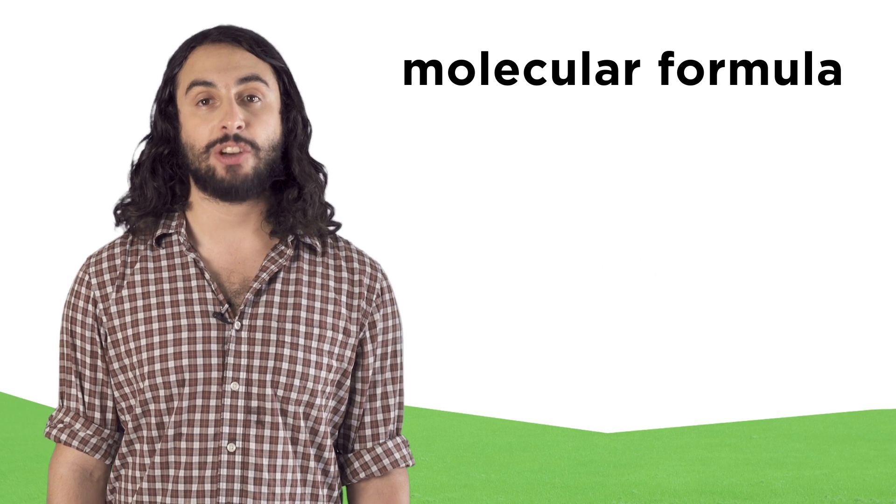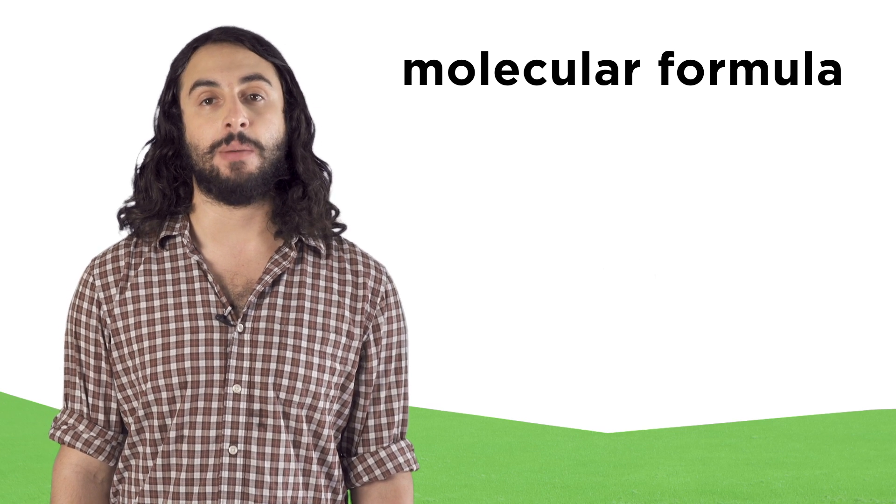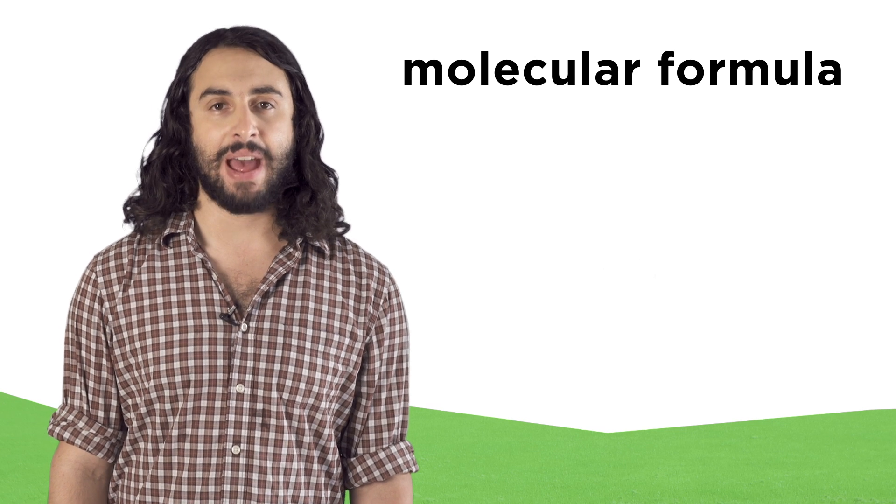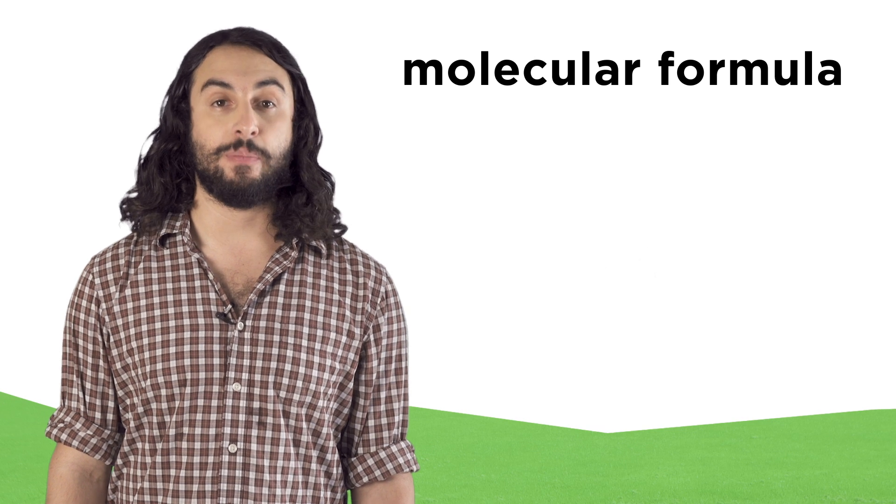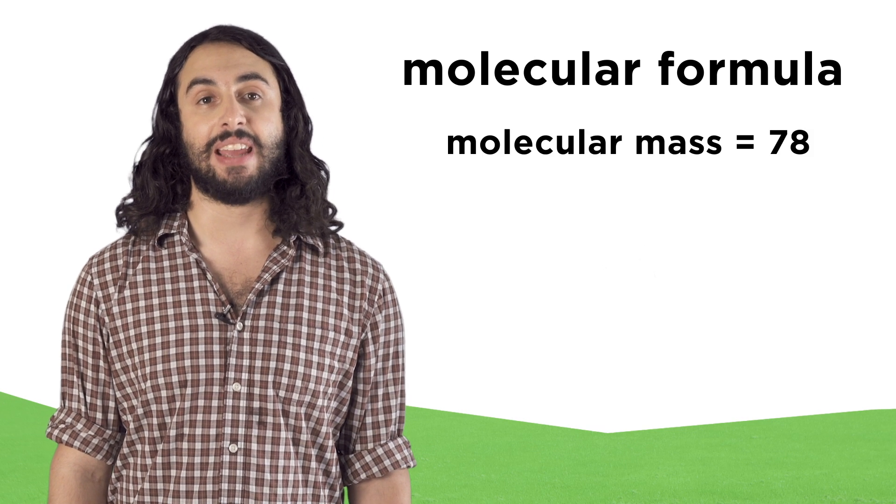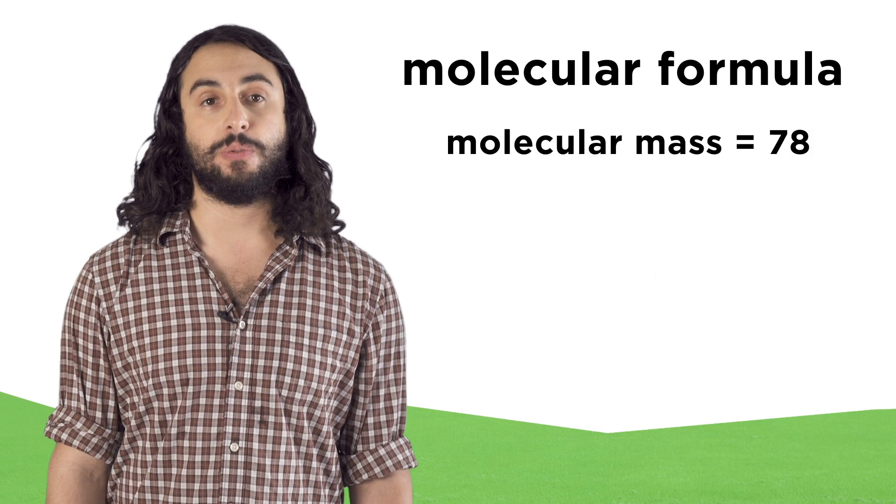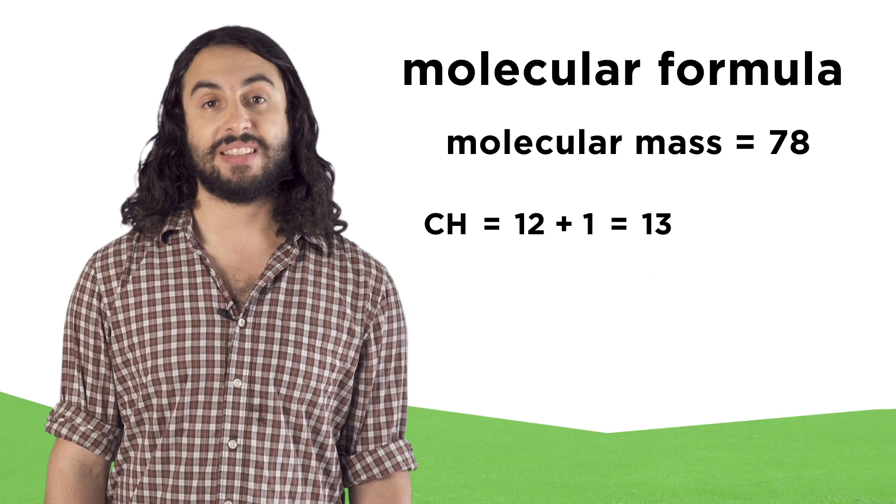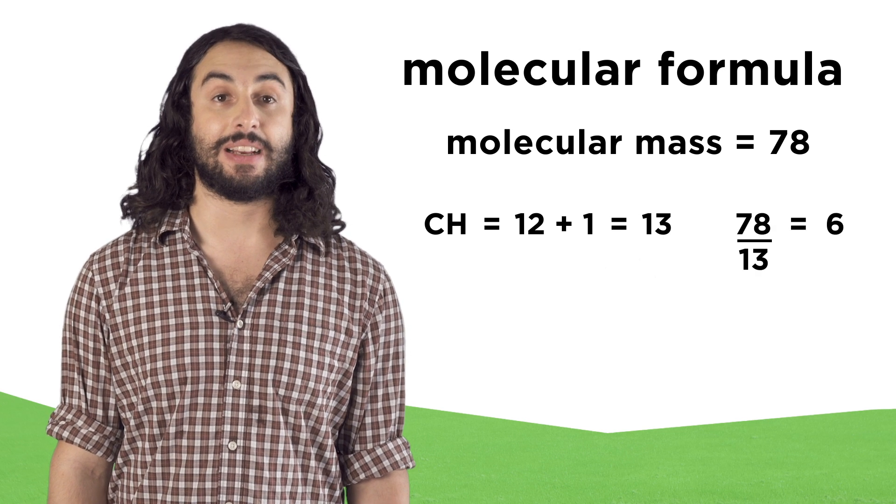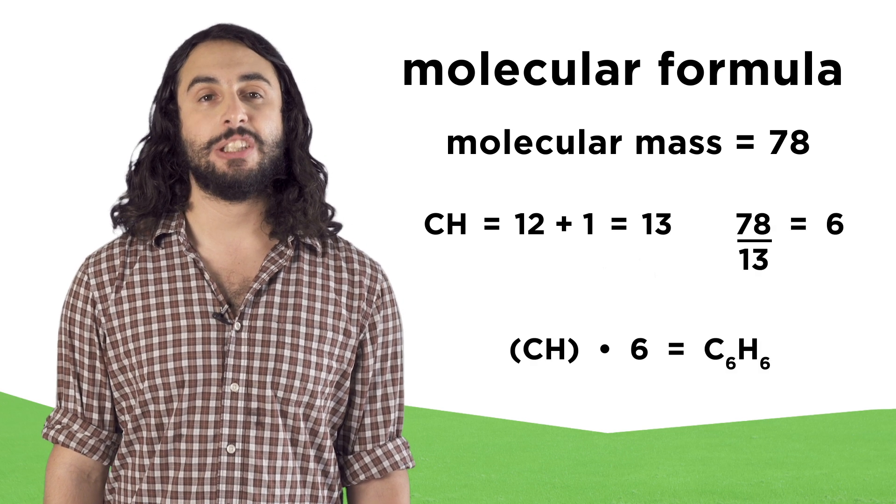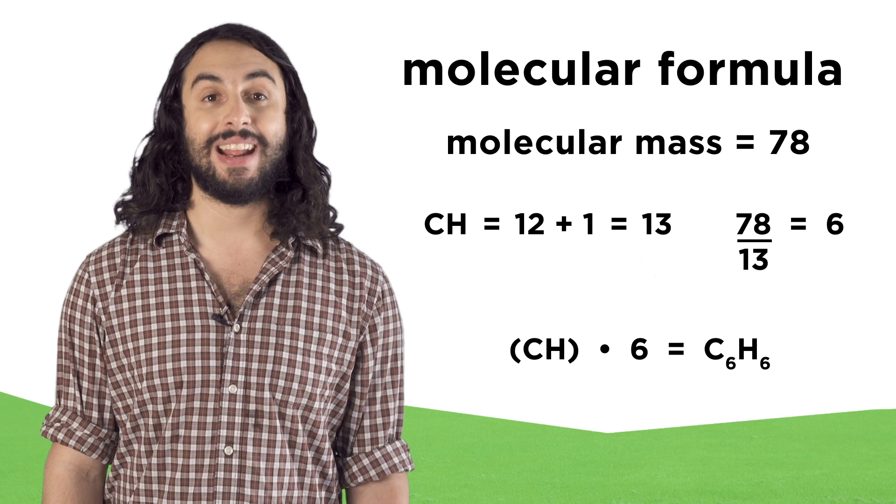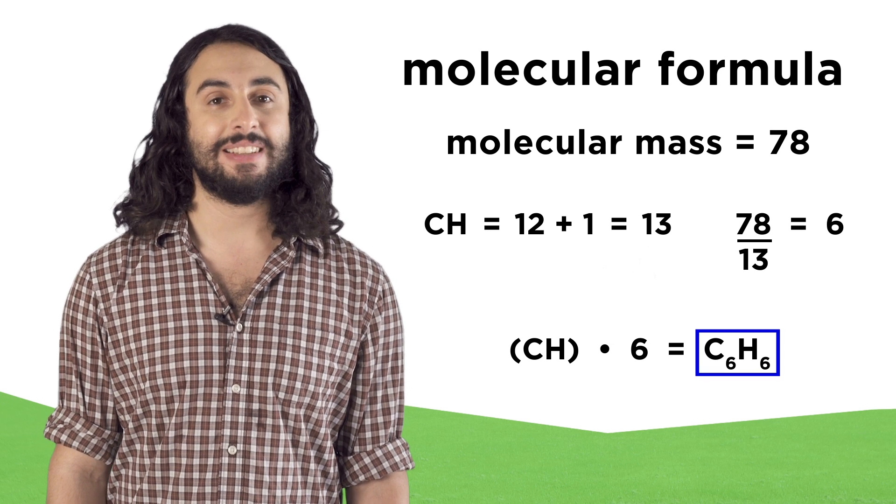If we want to find the molecular formula, which is the actual number of atoms of each element in a molecule, we need the molecular mass. Let's say we know that for benzene the molecular mass is 78. One unit of the empirical formula weighs 13, and 78 divided by 13 is 6. This means we need six units of the empirical formula to get the molecular formula, or C6H6.